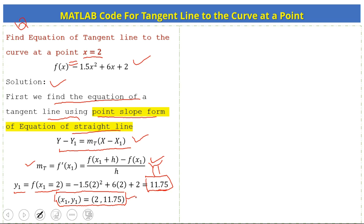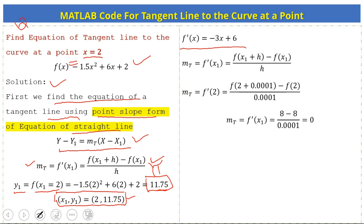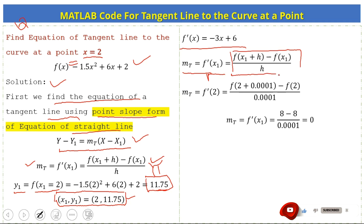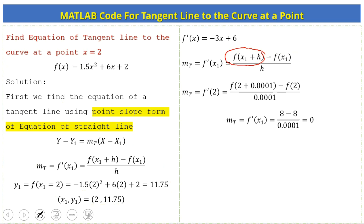Next we find the derivative of the function to calculate the slope of the tangent line. We use the increment form to calculate the derivative, evaluating the function at x1 and at x1 + h. Here we take h = 0.001.